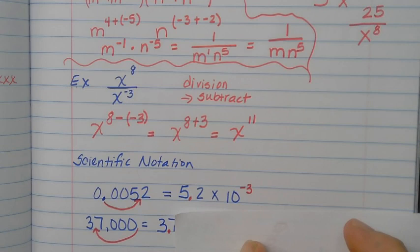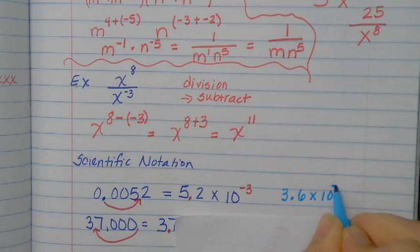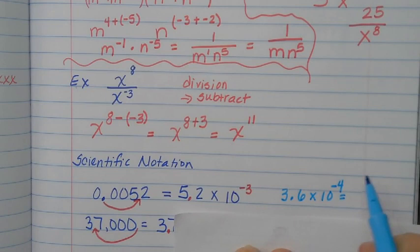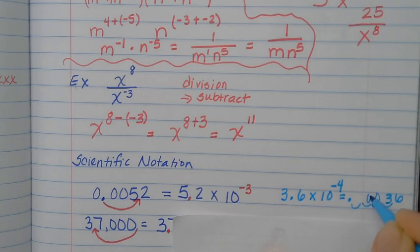Now if we're going backwards — say I have 3.6 times 10 to the negative 4. When it's negative, it came from a very small number. The 3.6 goes at the back end; the decimal was here, and I move it to the left 4 spaces: 1, 2, 3, 4, filling in zeros. So it becomes 0.00036.